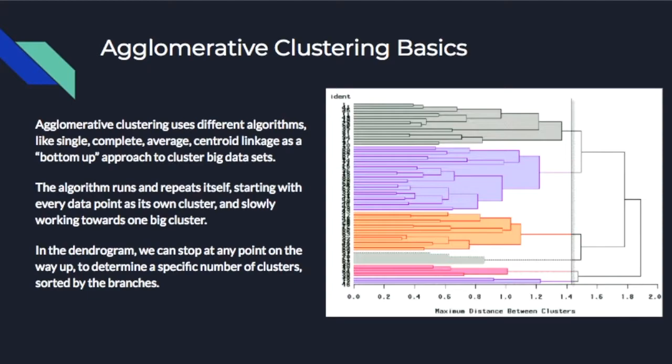Talking a little bit about agglomerative clustering, which is the same as hierarchical clustering — we've looked at the very basics of how the algorithm runs in class before, and of course the dendrogram and how that works visually. Just to review and go a little more in depth, on the right is a picture of a very intense and nicely color-coded dendrogram.